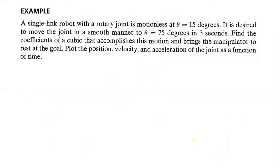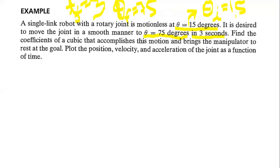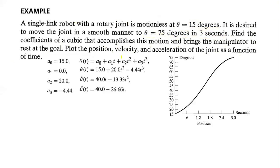Let's take an example. A single-link robot with a rotary joint is motionless at theta equals 15 degrees, so theta_i equals 15. It is desired to move the joint smoothly to theta equals 75 degrees in three seconds, so T_final equals 3 seconds and T_initial equals 0. Find the coefficients of the cubic that accomplishes this motion and brings the manipulator to rest at the goal. Plot the position, velocity, and acceleration as a function of time. The cubic equation has coefficients a0, a1, a2, a3.